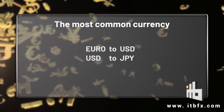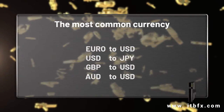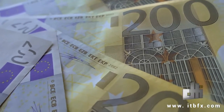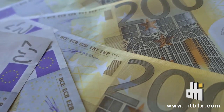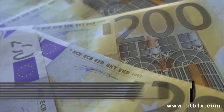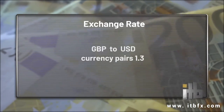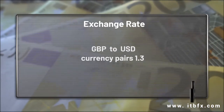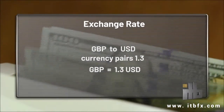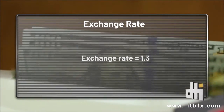In each currency pair, the exchange rate of the first currency is determined compared to the second. For example, if the rate of the British pound to the US dollar currency pair is about 1.30, that means for every one pound you get about 1.30 dollars. This number is called the exchange rate.